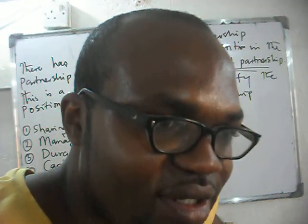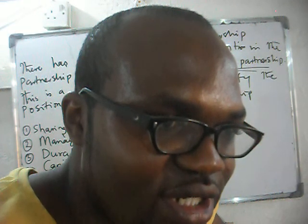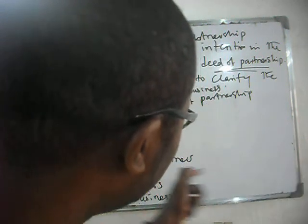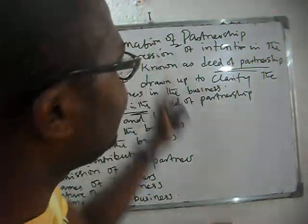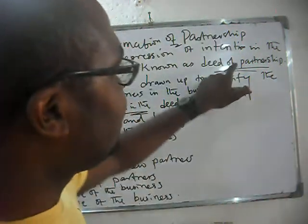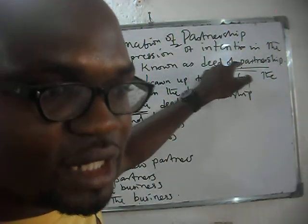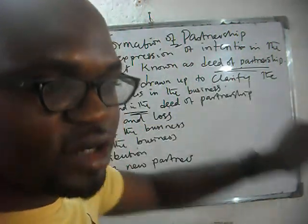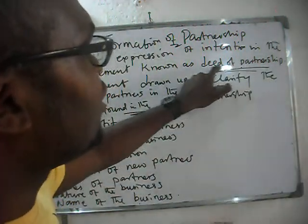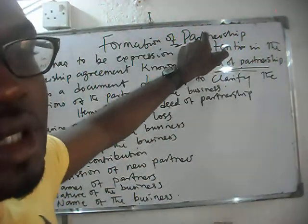Name of the business: what name are we going to call our partnership? For example, 'Toby, Judith and Co.' — it has to be there. So these are all the items of information that have to be inside the deed of partnership, and it is with this deed of partnership that you form a partnership business.